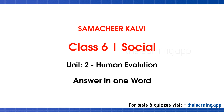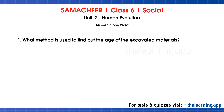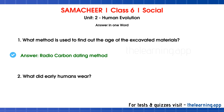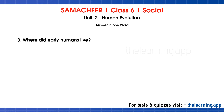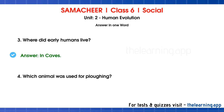Next, answer in one word. First question: What method is used to find out the age of the excavated materials? Correct answer: Radiocarbon dating method. Second question: What did early humans wear? Correct answer: Hides of animals and bark of trees and leaves. Third question: Where did early humans live? Correct answer: In caves.